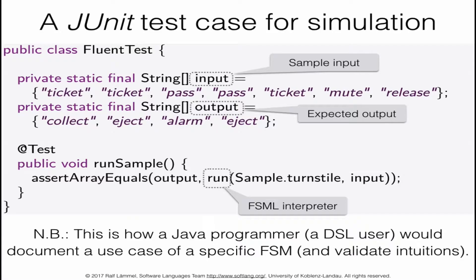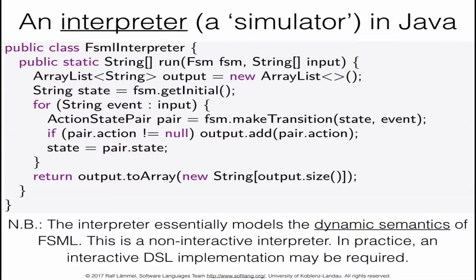We can now test what we have. Here is a JUnit test case. We assume some input — an event sequence — and some expected output — an action sequence. We also assume a run method on top of the makeTransition method. We check that if we take our turnstile FSM and the input, we get the expected output. The run method is a straightforward loop over the given input, using the makeTransition method from the Fluent API in each iteration to look up the action-state pair for the given state and event.